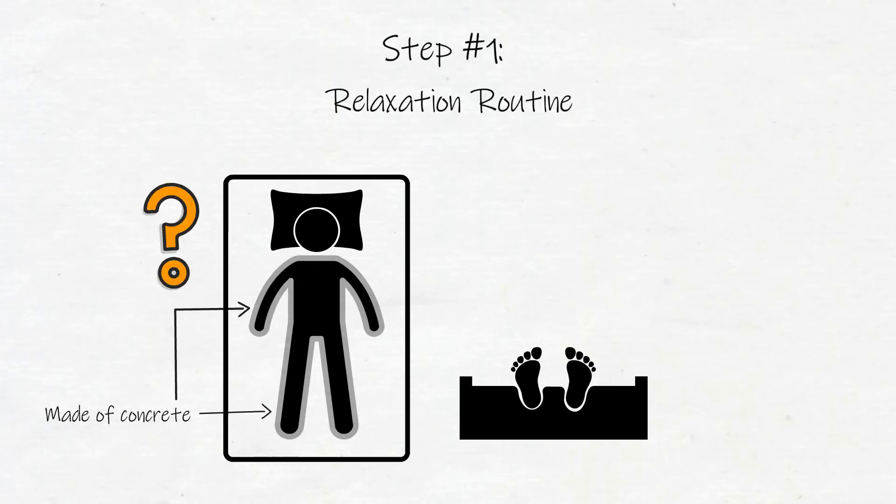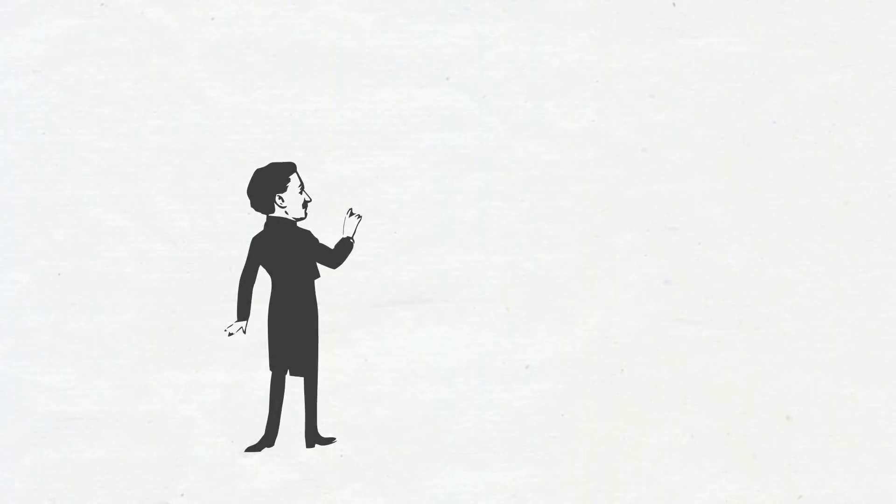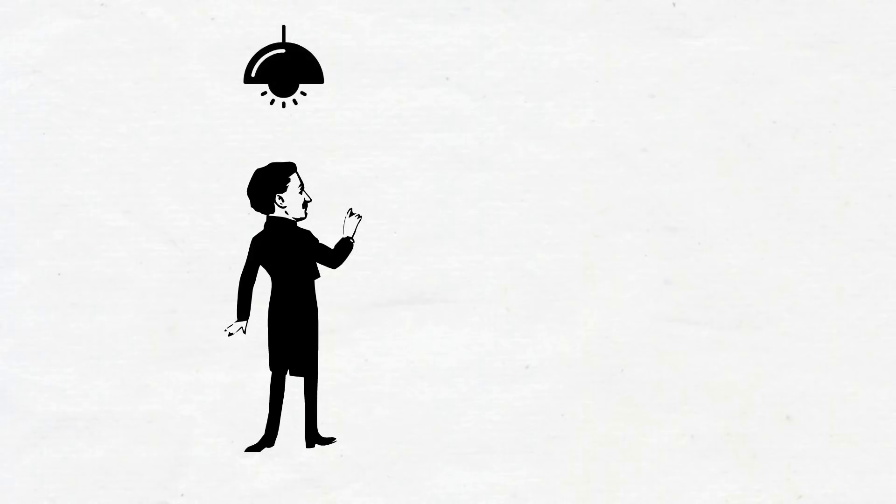Now, why is this step important? Well, in order for your mind to accept steps two and three, you need to eliminate tension from your body. If you've ever seen a hypnotist perform on stage, you'll notice that the hypnotist starts their show by turning down the lights and getting people on stage to progressively relax their bodies.